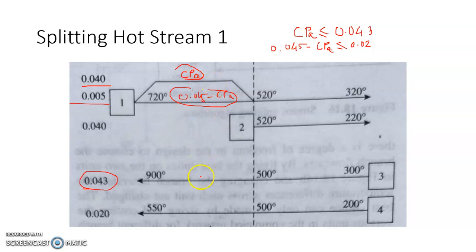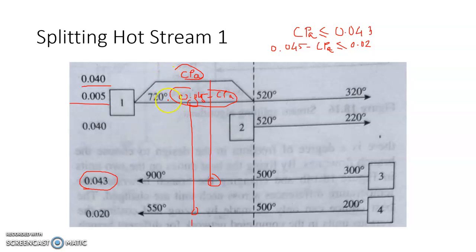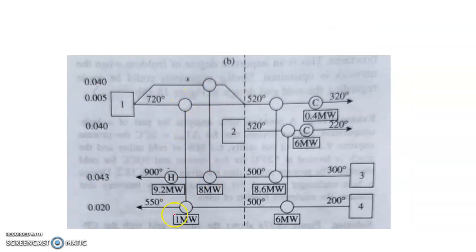Sub-stream 1B exchanges 1 MW with cold stream 4, and sub-stream 1A exchanges the remaining 8 MW with cold stream 3, satisfying its requirement. When both sub-streams are mixed at the outlet they arrive at 520°C, having given away a total of 9 MW. So 8 MW and 1 MW are exchanged above pinch, and the remaining 9.2 MW is supplied as hot utility.